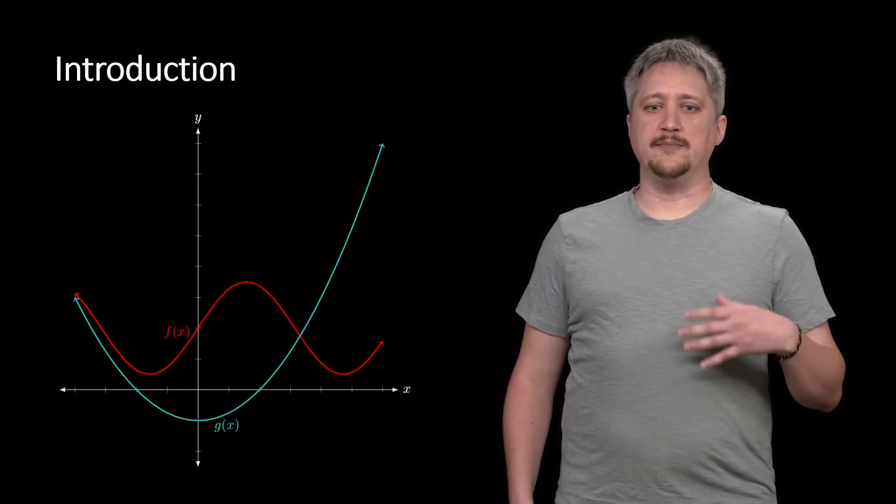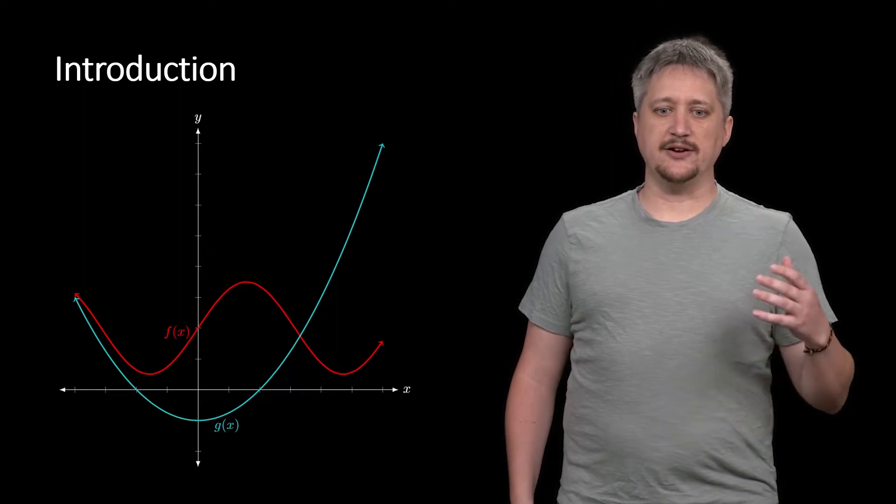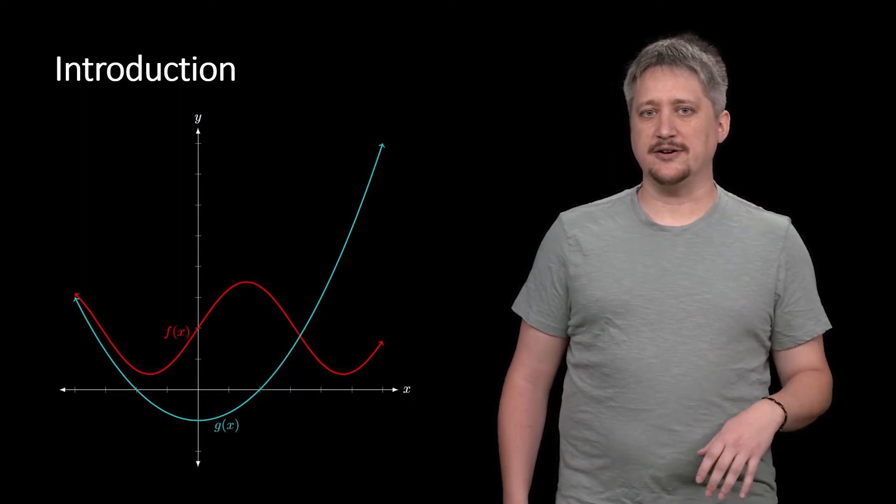In doing this we're going to take a mostly graphical approach. So we're going to start with two random curves of functions like these. Here we have our f(x) in red and our g(x) in this teal color.